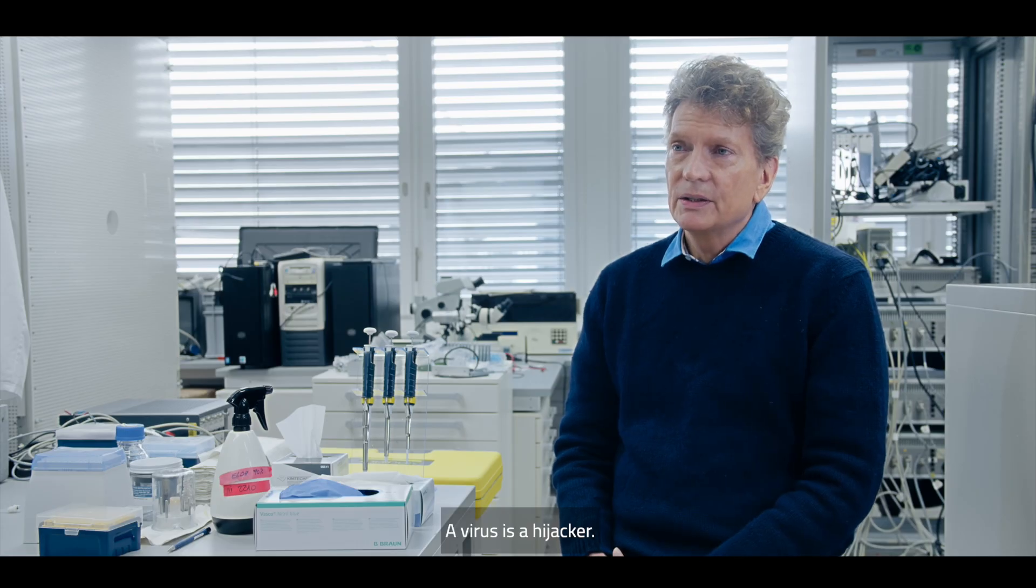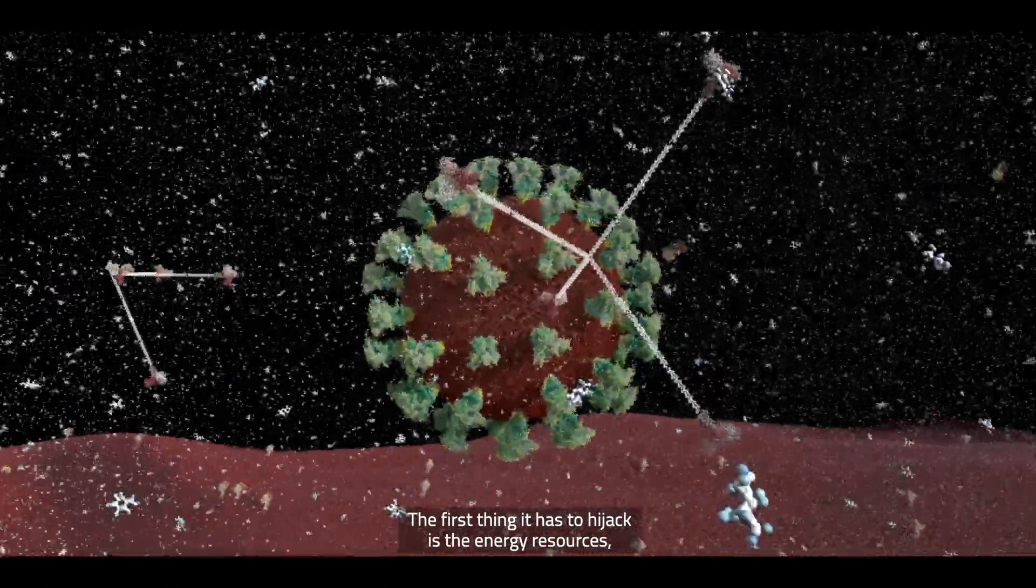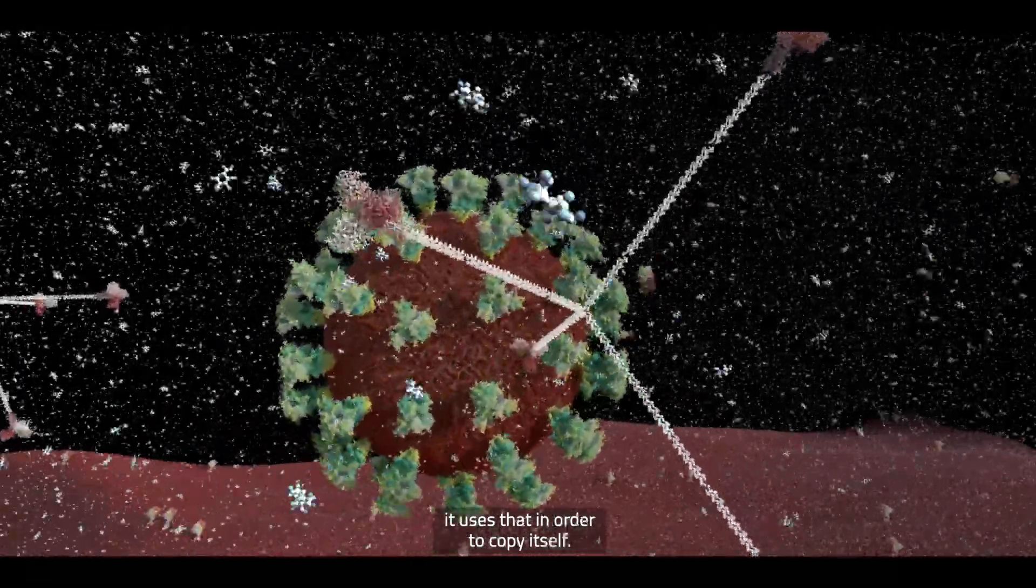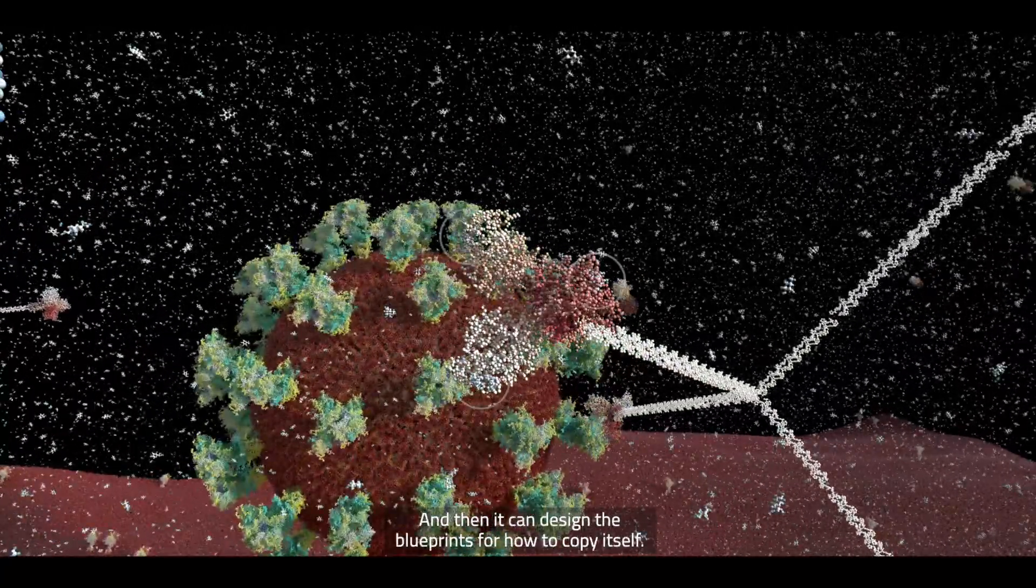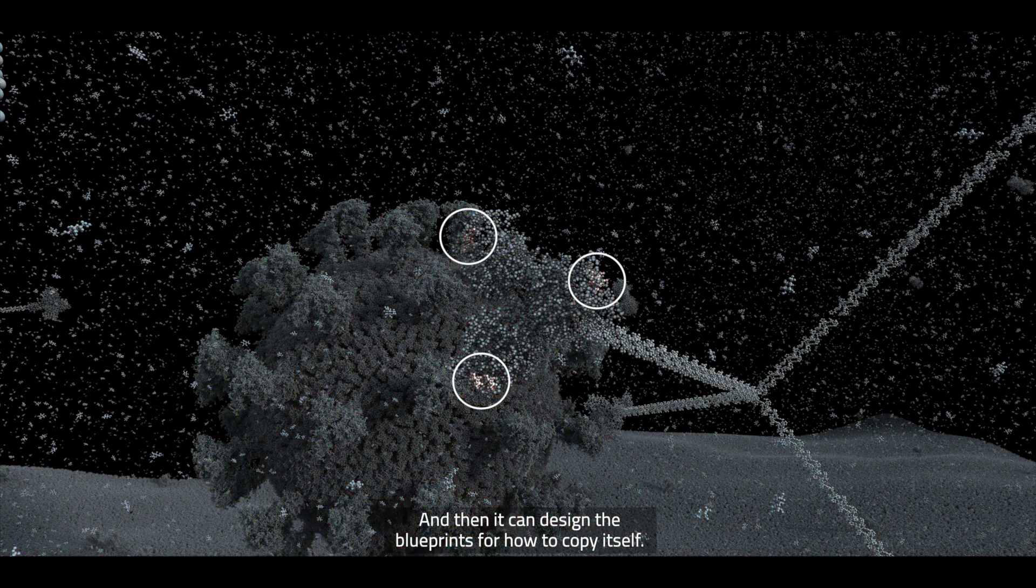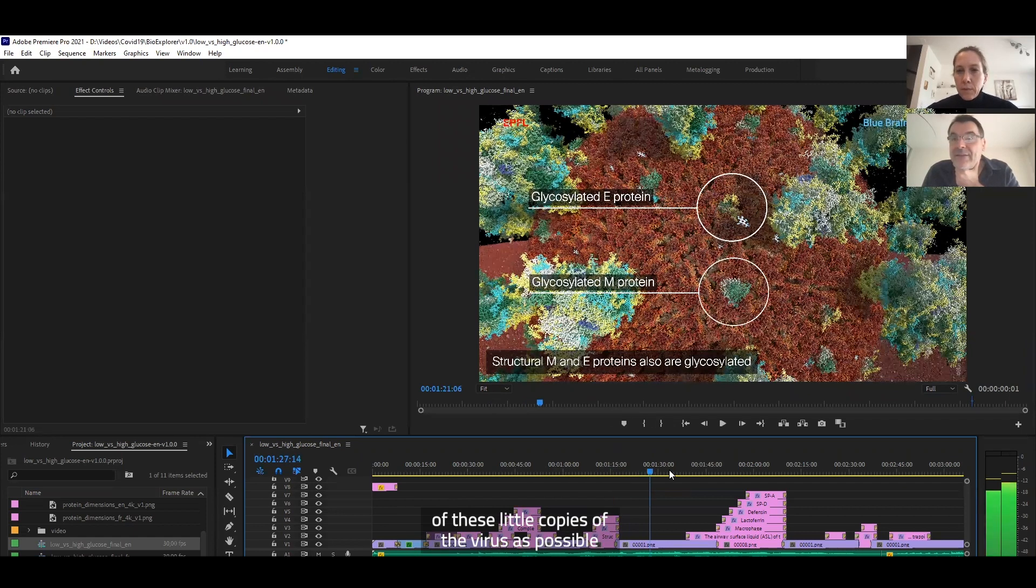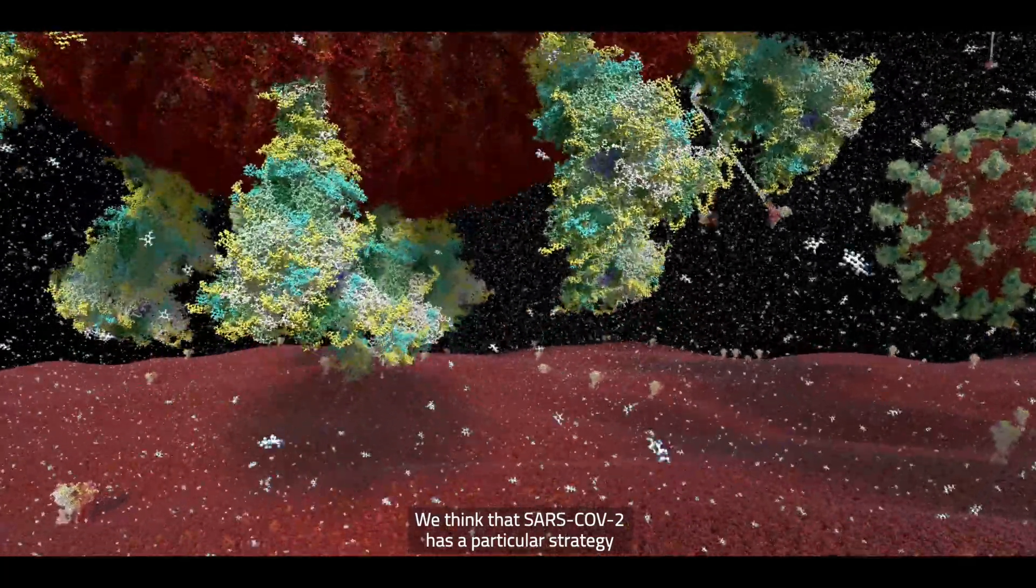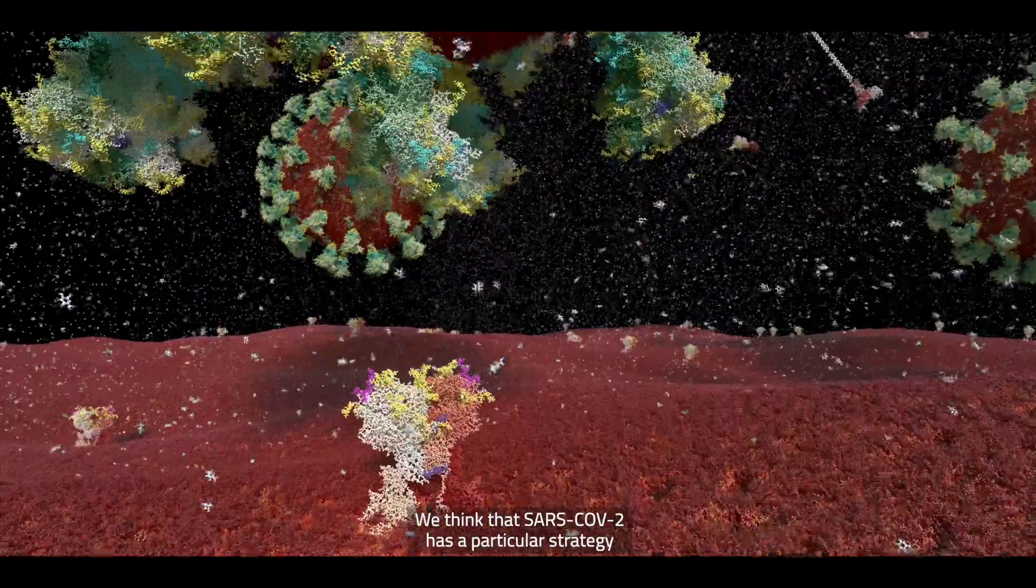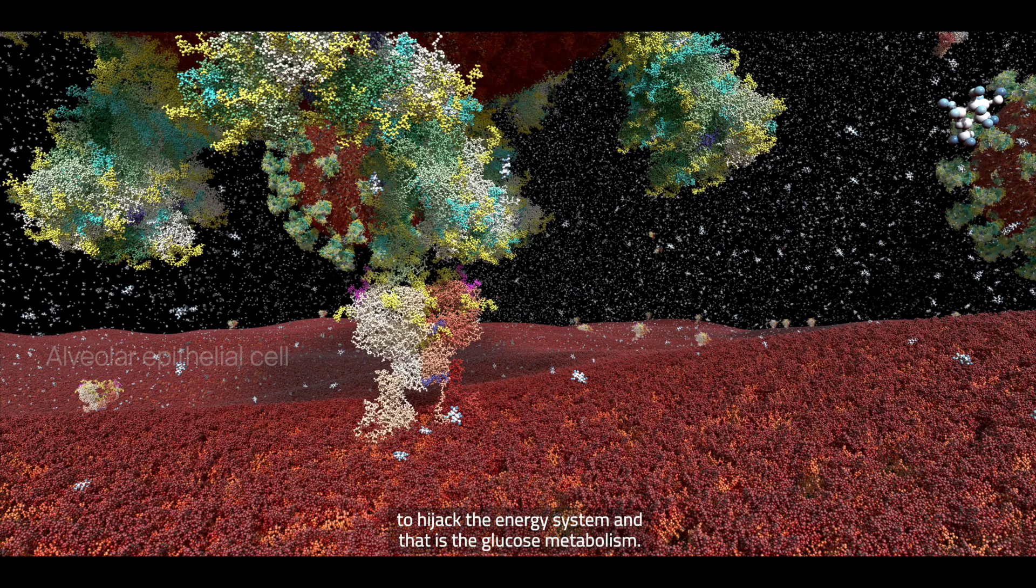A virus is a hijacker. The first thing it has to hijack is the energy resources. It uses that in order to be able to copy itself. The second thing it has to hijack is the genetic machinery, and then it can design the blueprints for how to copy itself. And the third thing it needs to hijack is the protein factory, so that it can pump out as many of these little copies of the virus as possible before the cell dies. We think that SARS-CoV-2 has a particular strategy to hijack the energy system, and that is the glucose metabolism.